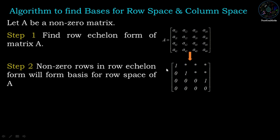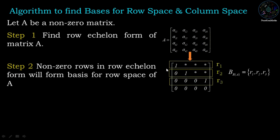First, identify nonzero rows in row echelon form. So R1, R2, R3 are the nonzero rows which will form a basis for the row space of A.